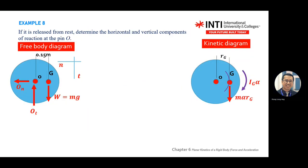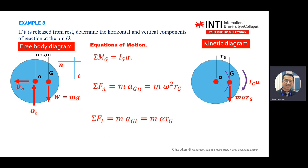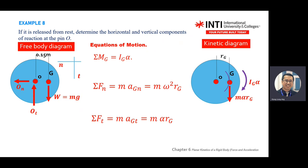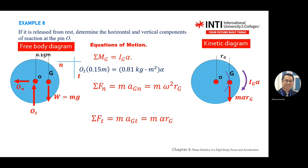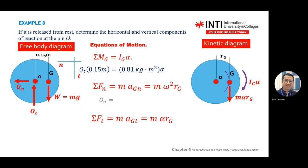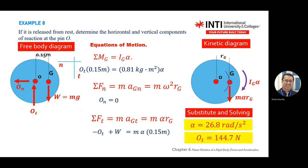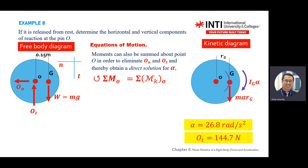Then pull out the famous equations: F equals MA in two sets — normal and tangential — and one more: M_G equals I_G times alpha. Substitute all the values to find the missing pieces. To find the remaining unknowns, use the moment equation at point O. The moment from the free-body diagram equals the moment from the kinetic diagram.